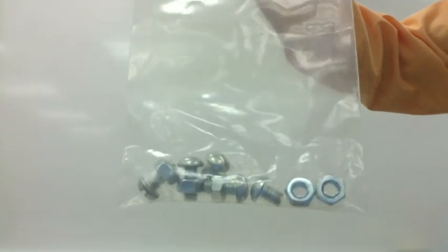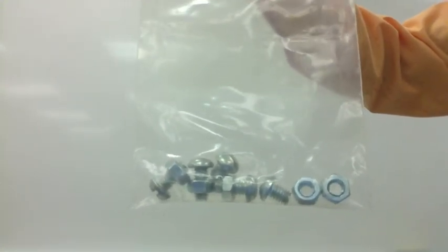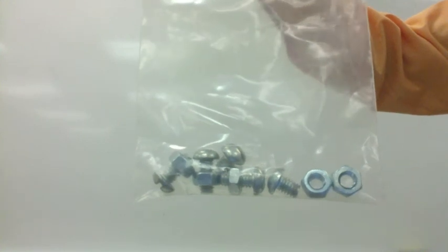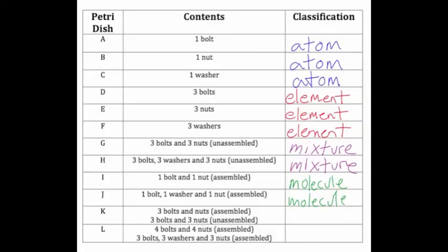In bag K, there are three bolts and three nuts that are assembled — they're hooked together. And we also have three bolts and three nuts that are not assembled. So in bag K there are both atoms hooked together and not hooked together. We say it is a mixture, but it's a mixture of molecules and elements, or atoms.